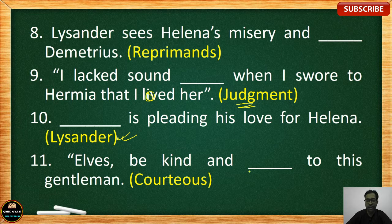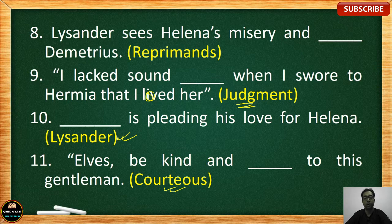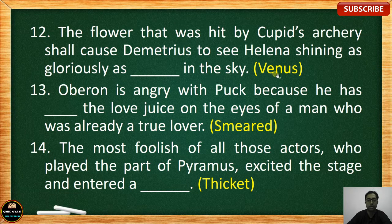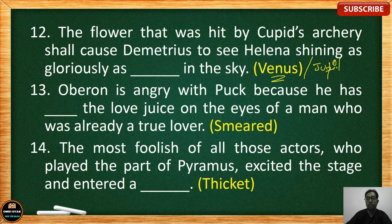Number 11: 'Else be kind and blank to this gentleman.' The correct answer is 'courteous' — else be kind and courteous to this gentleman. Number 12: The flower hit by Cupid's archery shall cause Demetrius to see Helena shining as gloriously as blank in the sky. You might be given 'Venus / Jupiter' as options — the correct answer is 'Venus.'